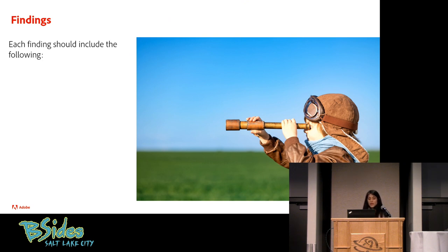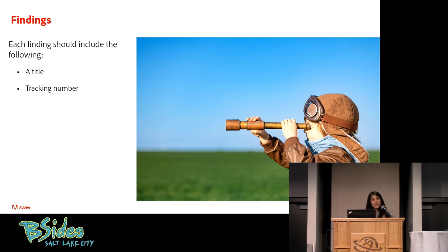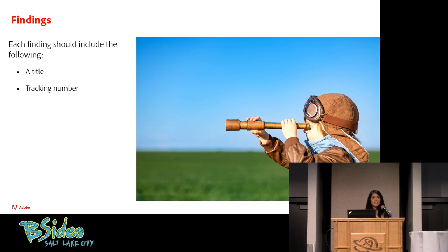On to findings. Each finding should include a title — this can be simple, like 'Cross-site Scripting' or 'Stored Cross-site Scripting.' You also want to have a tracking number. Companies tend to assign a tracking number to every single finding so there's no mistake about which finding we're referencing in discussions.